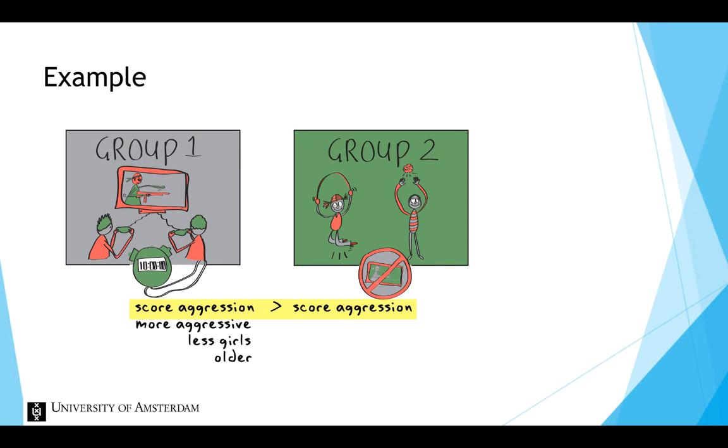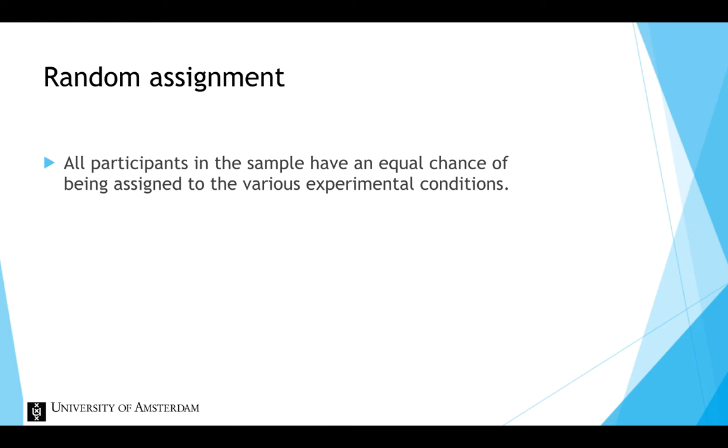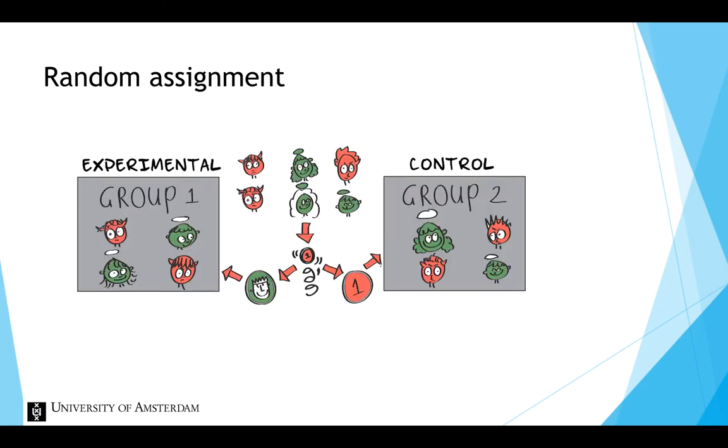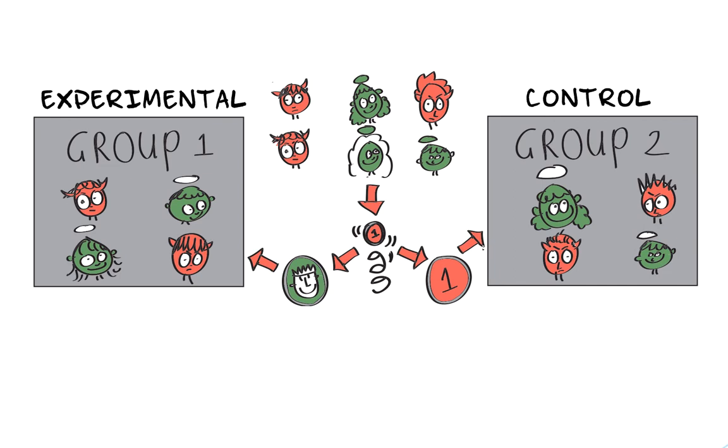This is where random assignment comes in. Random assignment ensures that all participants in the sample have an equal chance of being assigned to the various experimental conditions. In this example, we could randomly assign children to the experimental condition with violent video games or to the control condition with no violent video games. You could do this by flipping a coin: heads for the experimental condition and tails for the control condition.